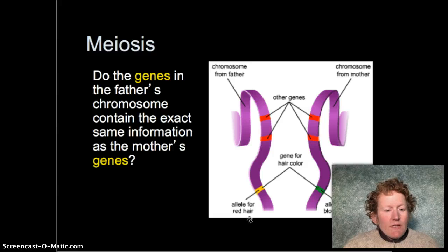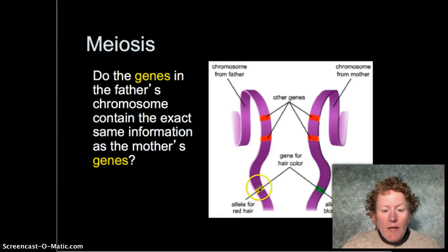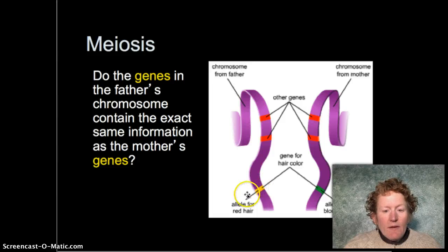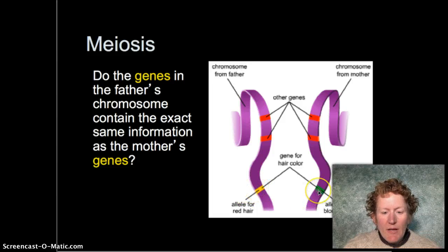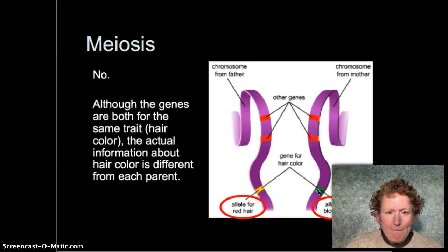For example, the allele for red hair — where this is the gene for hair color — might be red on one chromosome and blonde on the other.